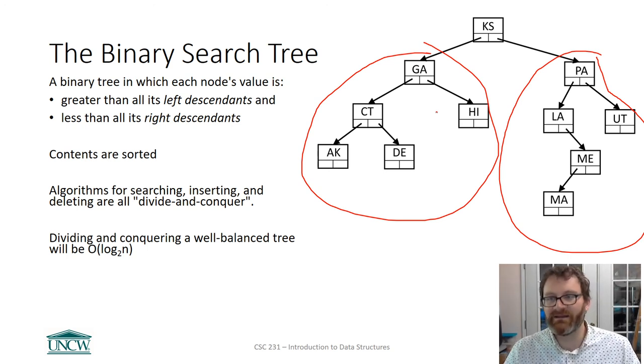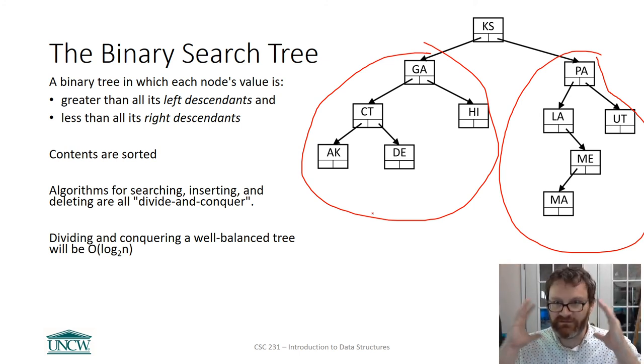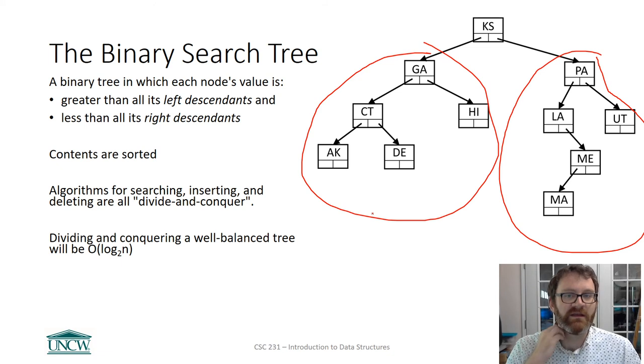But the cool thing is if we maintain this property, we can do really interesting things. First of all, these contents are sorted. If you kind of look at this, just kind of going from left to right, it's sorted, which is kind of neat. We can use that to our advantage. The other thing is when we go to put things in this tree, if we think of it like a tree, we can divide and conquer this problem, just like binary search, merge sort, quick sort. And if the tree is nice and balanced, in other words, if it's not raggedy, if everything's kind of flat and fluffy here, and the tree is kind of filled in, our algorithms for inserting, for deleting, and for searching this tree are going to be log base 2 of n.